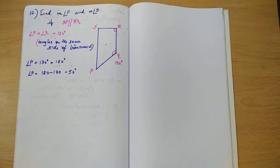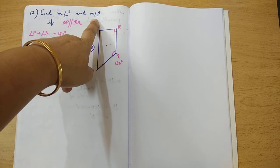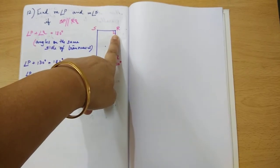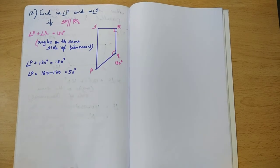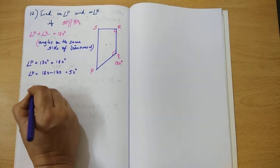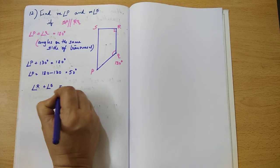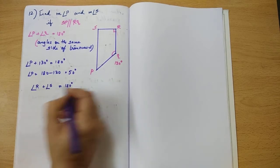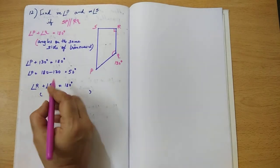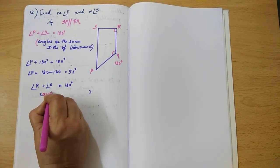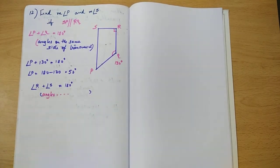Now the other thing which we have to find is measure of angle S. What do we know about angle R? It's 90 degrees. So applying the same property once again. Angle R plus angle S is equal to 180 degrees. Once again, please mention the same property which you are using, angles on the same side of the transversal.